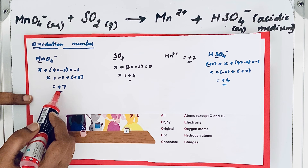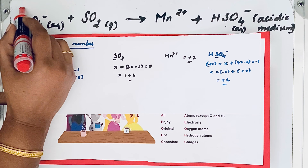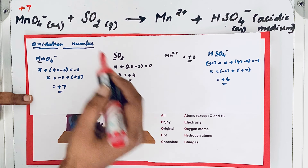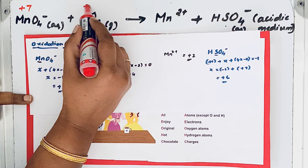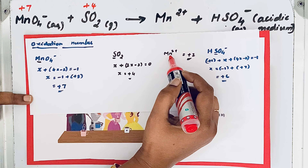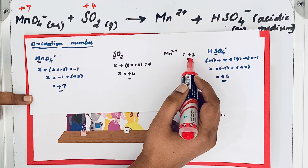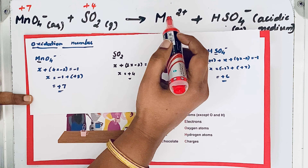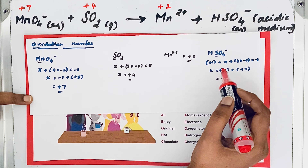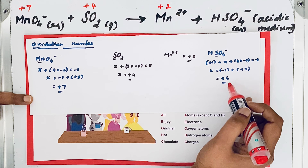The oxidation number of manganese in MnO4⁻ is +7. For sulfur in sulfur dioxide, it is +4. Mn²⁺ is a monatomic ion, so the charge itself is the oxidation number: +2. Then in HSO4⁻, the oxidation number of sulfur is +6.